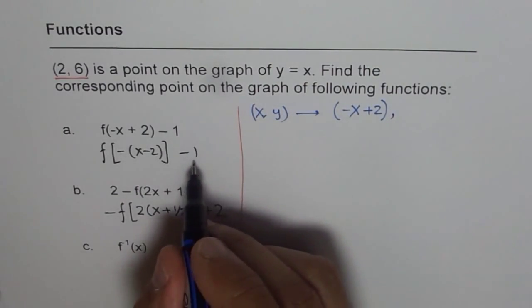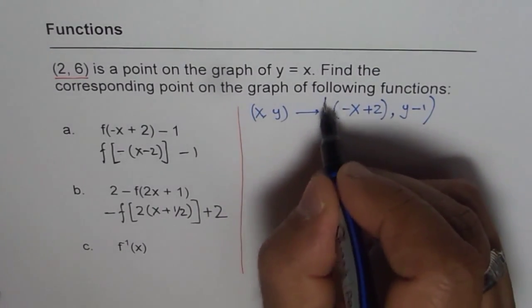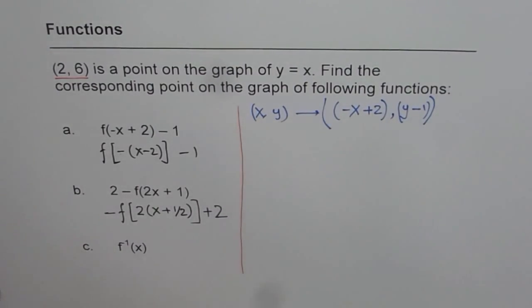As far as the y value is concerned, it is y minus 1. So that becomes the coordinate point for x and y, in case of the first one.